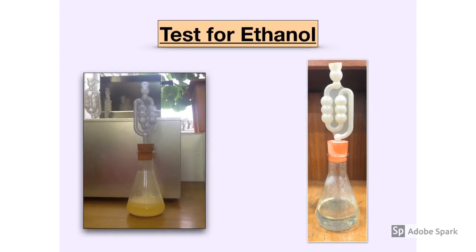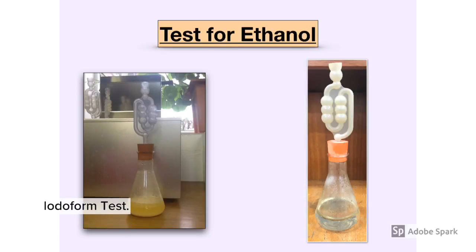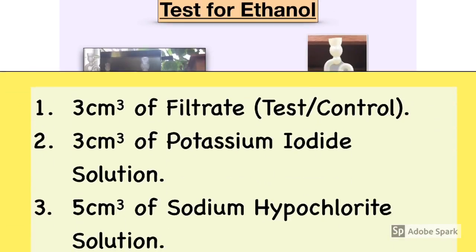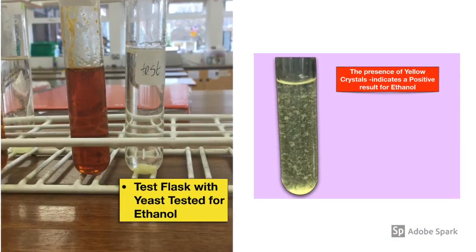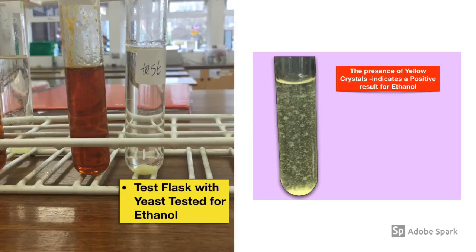The next part of the practical was testing for ethanol — proving that the yeast had anaerobically respired and produced ethanol. The test for ethanol is the iodoform test, and this was conducted on both samples. Yeast was removed from the test flask using filtration. Into a test tube, three cc's of the filtrate was placed into one test tube and three cc's of the control into another. To both samples, potassium iodide solution was added, then sodium hypochlorite solution, and both were heated in a water bath for five minutes. Yellow crystals appeared in the test flask — the flask which contained the yeast — and these yellow crystals are a positive result for ethanol.